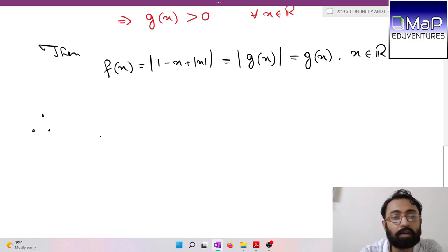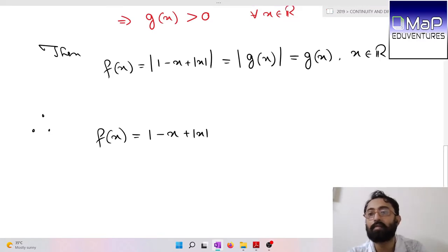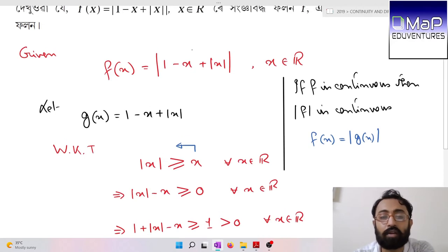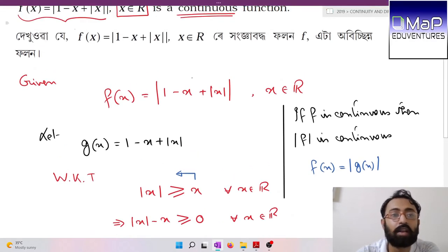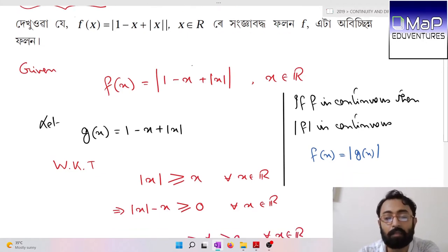Then f(x) = |1 - x + |x||, which is nothing but |g(x)|. Since g(x) is positive for all x belonging to real numbers, we can remove the modulus.